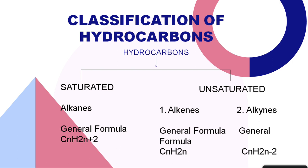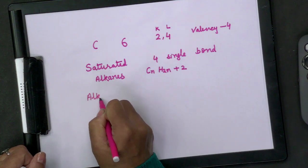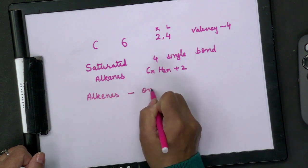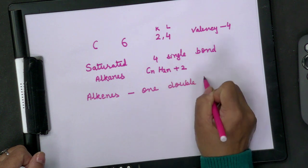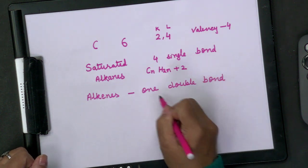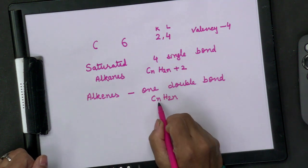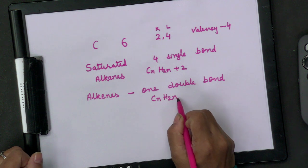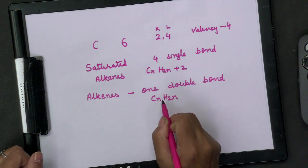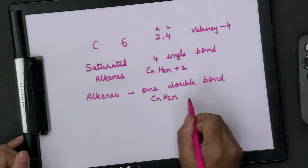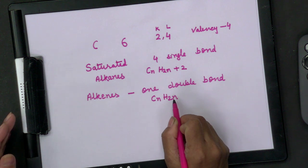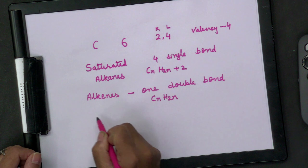Now we come to unsaturated hydrocarbons. There are two kinds: alkenes and alkynes. Alkenes have at least one double bond between two carbon atoms. Their general formula is CₙH₂ₙ — hydrogen atoms are double the number of carbon atoms. These are unsaturated because all valencies are not satisfied by single bonds alone; they also have a double bond.